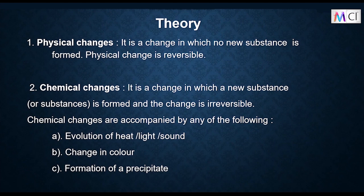Theory: Physical change is a change in which no new substance is formed, and it is a reversible change. Chemical change is a change in which a new substance or substances is formed and the change is irreversible. Chemical changes are accompanied by evolution of heat, light or sound, change in colour, and formation of a precipitate.